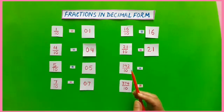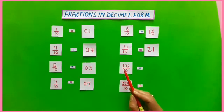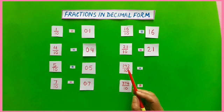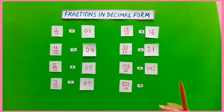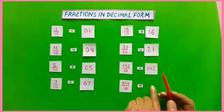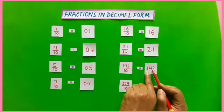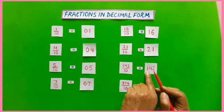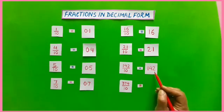Another fraction is 142 by 10. Here there are 3 digits in the numerator. So for writing its decimal form, we will write the numerator as it is, and then we will put a decimal by leaving 1 digit from the right-hand side. We will put a decimal and it is read as 14.2.